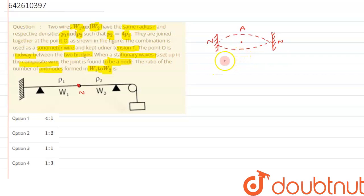It's been given that at this point a node is formed. So if we consider one loop is formed on either side, we can say that there will be the anti-node formed, one over here, one over here.